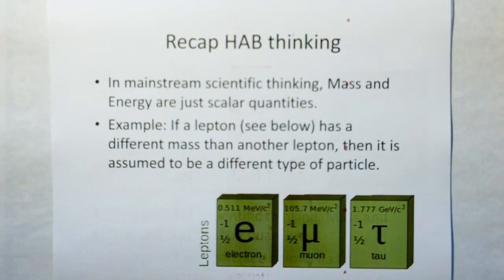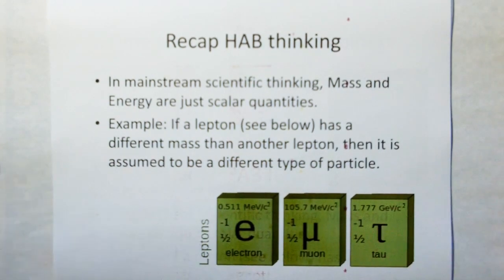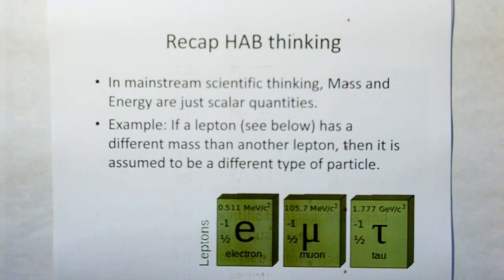So some of you are thinking that if it's only different by a constant, there's nothing new here. It's only the units that are different by a constant. The constructs are night and day. See, in the horse and buggy thinking, mass and energy are just scalar quantities. For example, if a lepton has a different mass than another lepton, then it's assumed to be a different type of particle because we think if it's got different mass, it must be an altogether different particle.